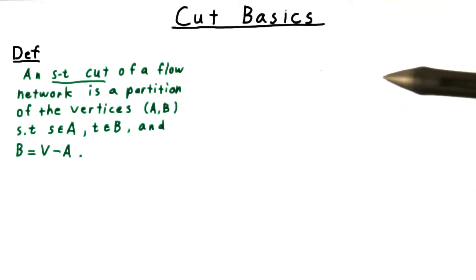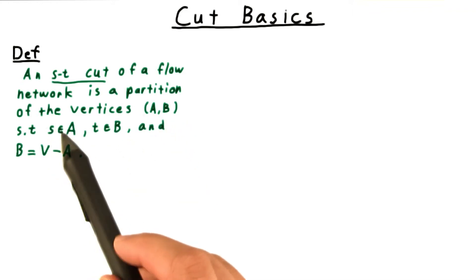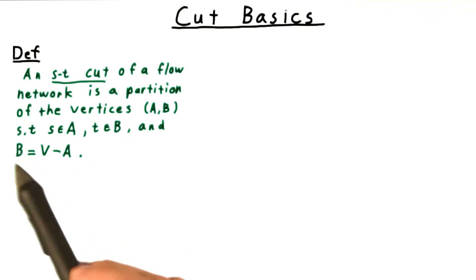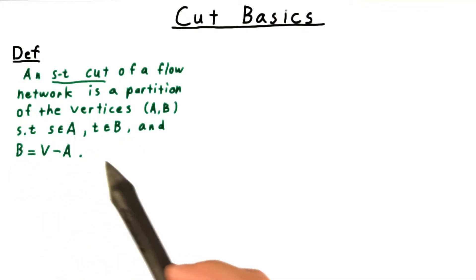We start with making a more precise definition of an ST cut, saying that it is a partition of the vertices such that the source S is in A and the sink T is in B, and B is defined to be the set of vertices minus those in A.